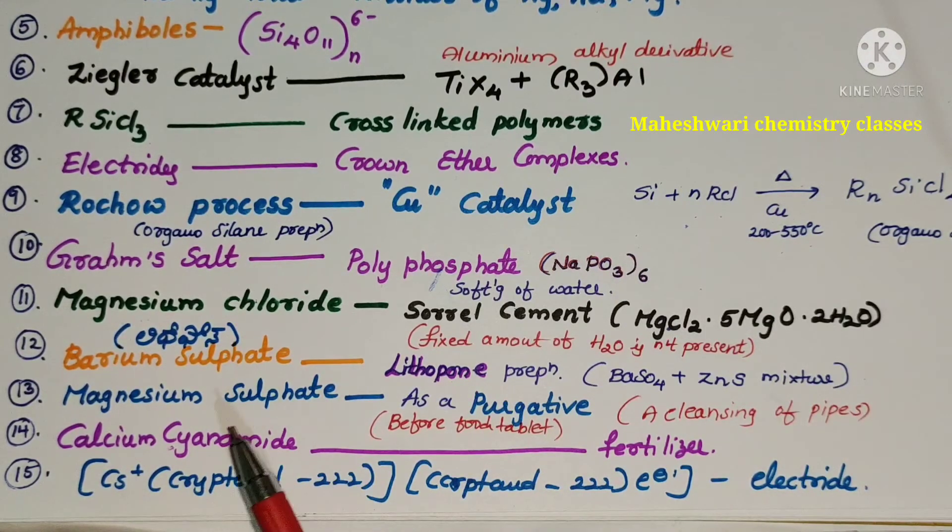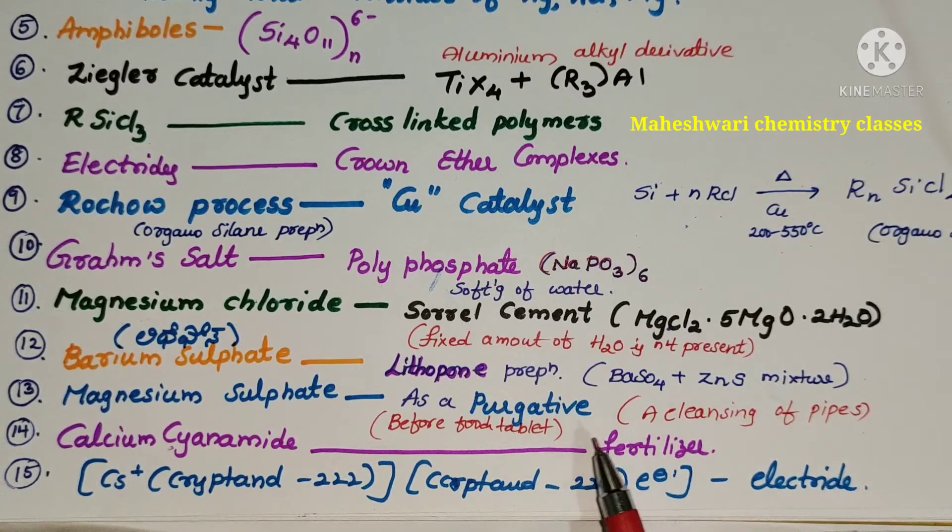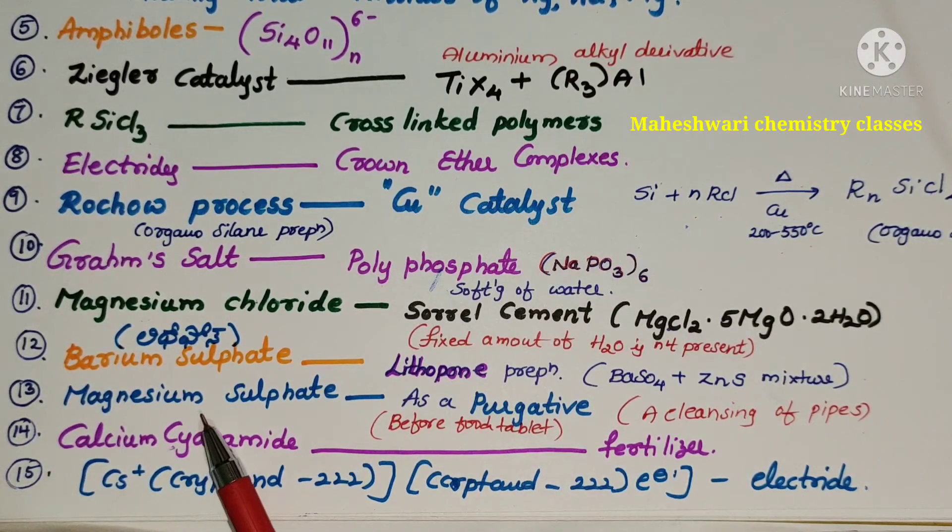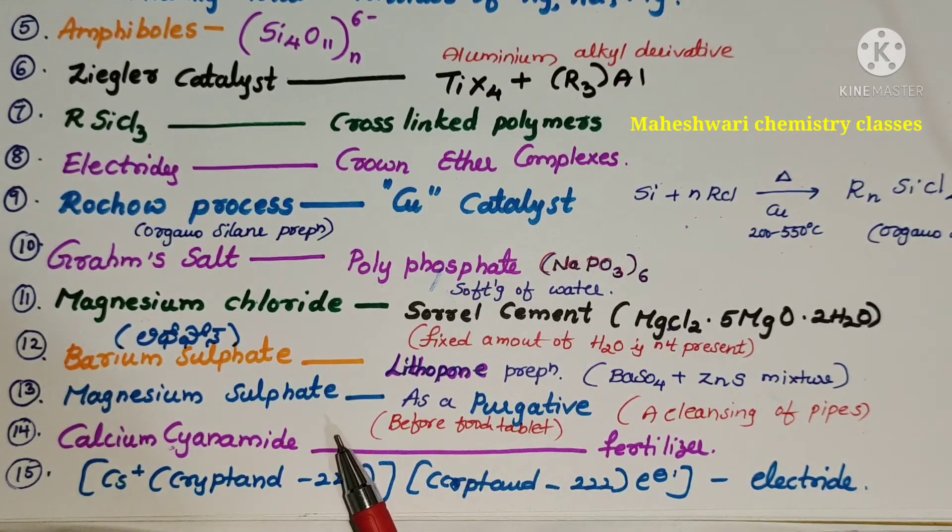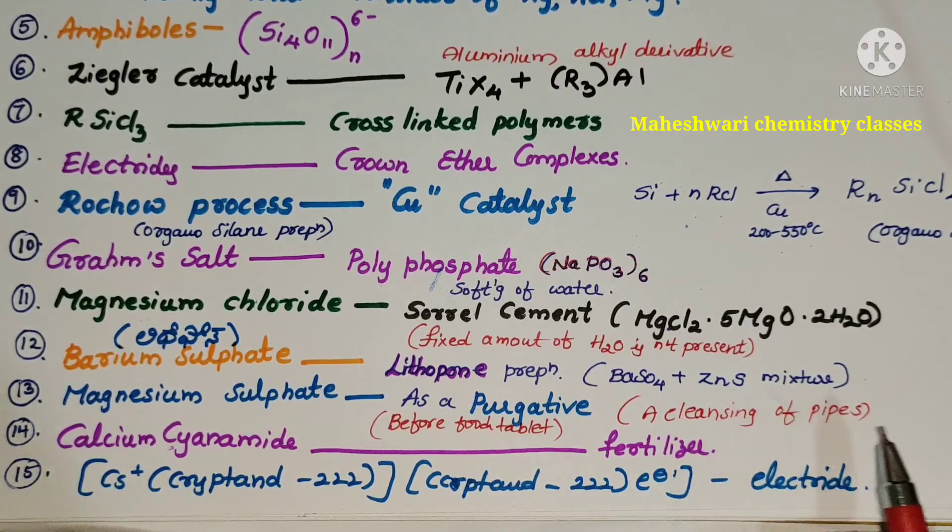Magnesium sulphate. Magnesium sulphate works like a purgative. Simply purgative means cleansing of pipes. When I am speaking about the problem, digestive problems. In the morning before breakfast, large intestine stored food need to digest. So, magnesium sulphate works like a purgative.